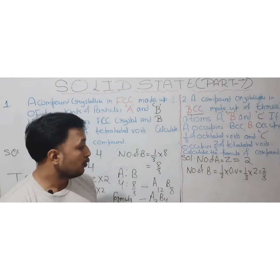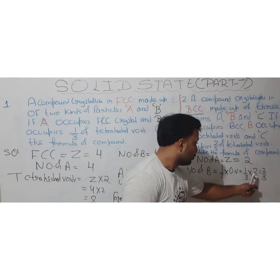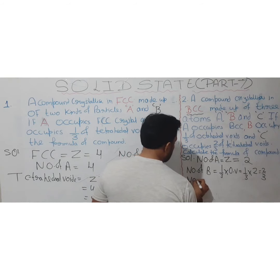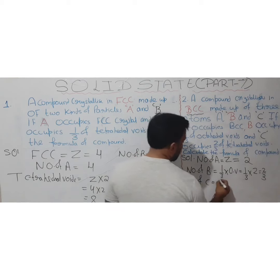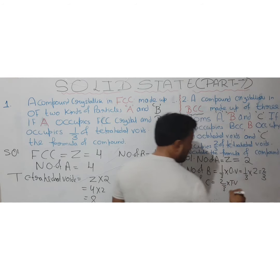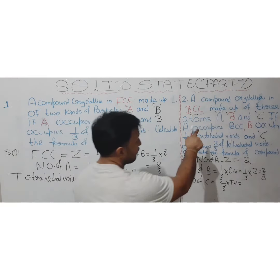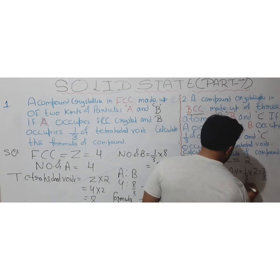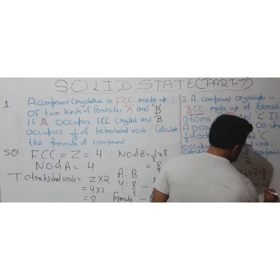For C: it occupies two-thirds of tetrahedral voids. Tetrahedral voids = 2Z = 2 × 2 = 4. So number of C = (2/3) × 4 = 8/3.